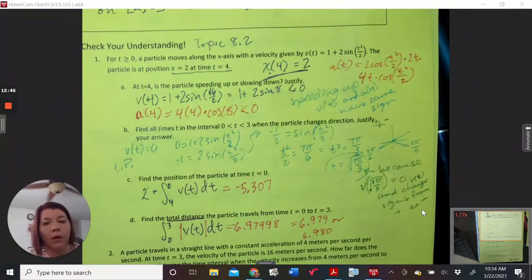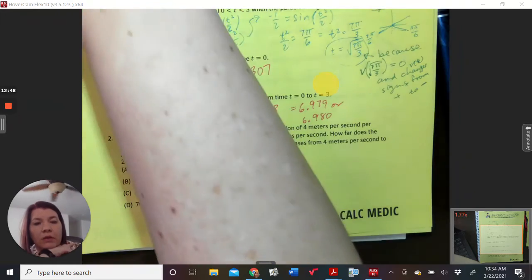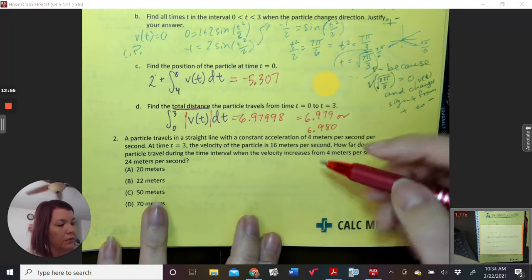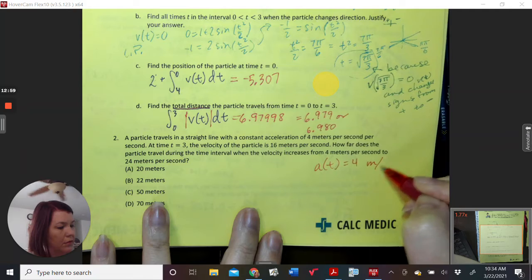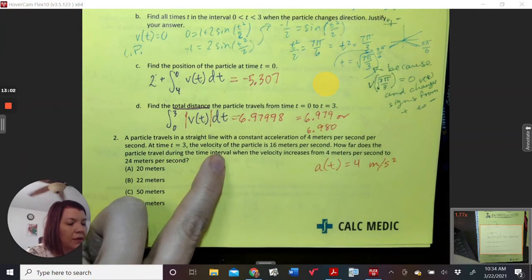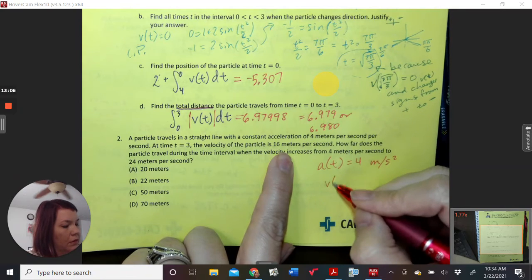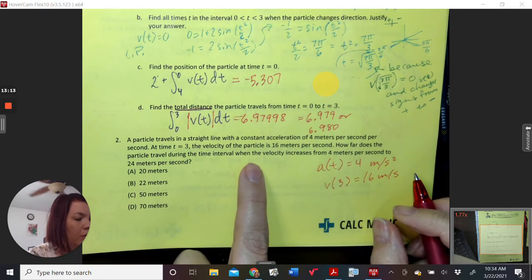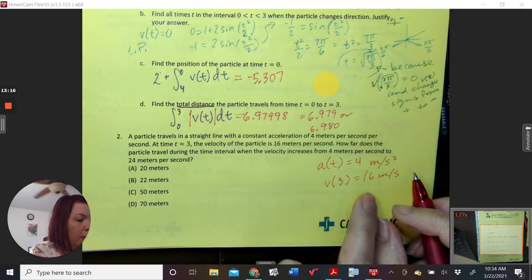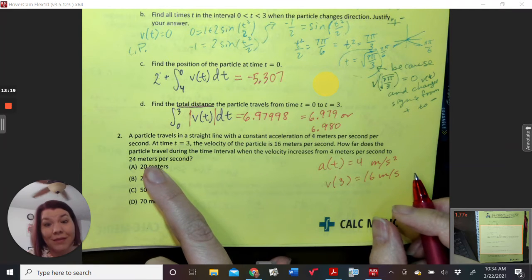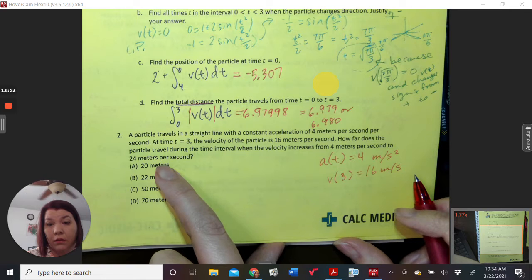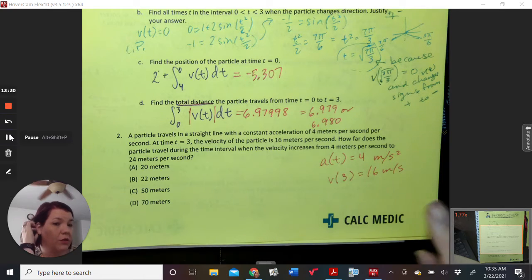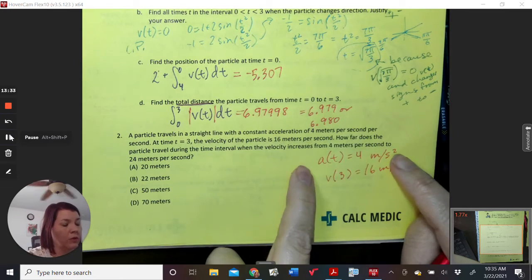A particle travels in a straight line with a constant acceleration of 4 meters per second per second. At time t, the velocity is 16 meters per second, V of 3 equals 16 meters per second. How far does a particle travel during the time interval when the velocity increases from 4 meters per second to 24 meters per second? I think that was a very interesting situation, don't you think? How will we find this answer? Let me think about that for just a minute, take a minute. So we do need to find V of t. This is an initial condition, we know this.